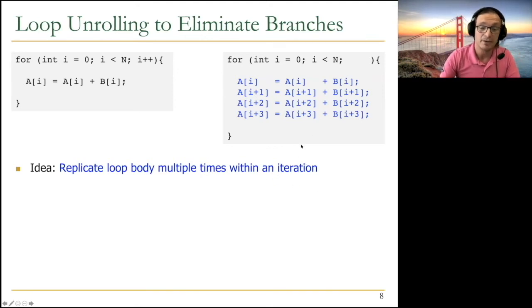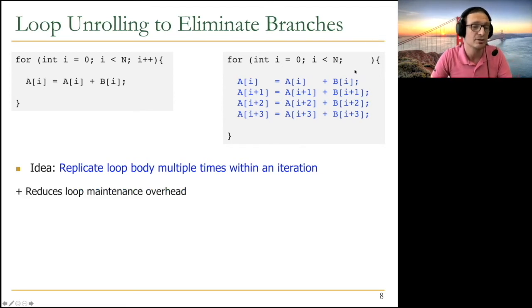And the idea in loop unrolling is to replicate the loop body multiple times within an iteration, as you can see over here. But of course, now you're doing four iterations, four original iterations within one iteration. So you need to make sure you increment the values correctly, and that's going to be a problem. But if you do this now, you don't execute as many branches, you don't execute as many loop control instructions. So you reduce the loop maintenance overhead.